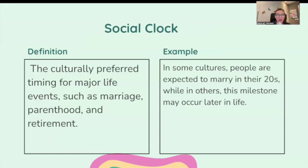The social clock: the culturally preferred timing for major life events such as marriage, parenthood, and retirement. In some cultures, people are expected to marry in their twenties, while in others this milestone occurs later in life — it really does depend on your culture.